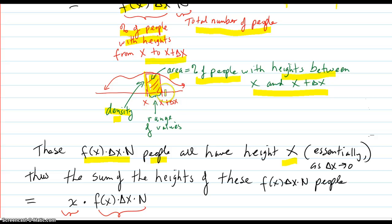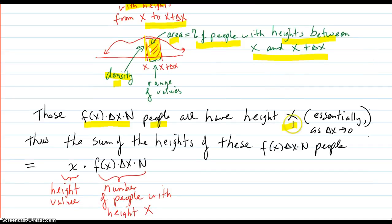some of them have heights between x and x plus delta x. But as delta x goes down to zero, you're just going to be sitting there in a limit with that one value x as their height. So they all essentially have height x.